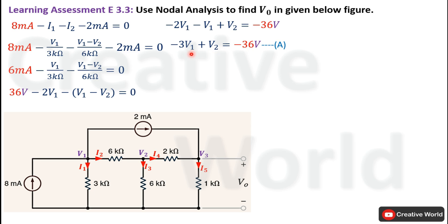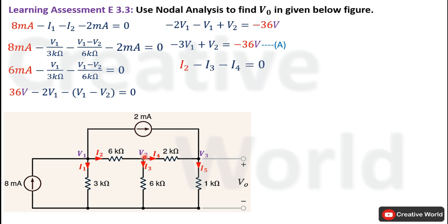We will now apply Kirchhoff's Current Law on the second node. Here, one current is entering (I2) while two currents are leaving (I3 and I4). Entering current is taken with a positive sign and leaving currents with a negative sign. The I2 equation is V1 minus V2 divided by 6 kΩ, as calculated in the previous step.